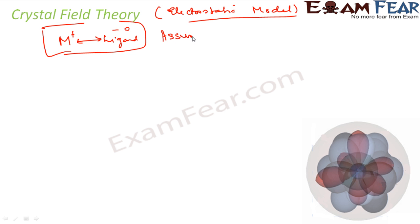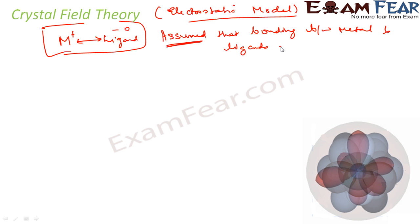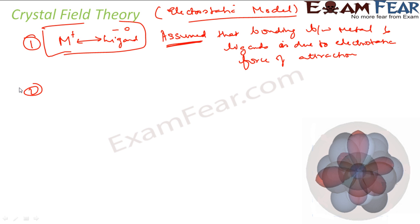Please note — it is assumed that the bonding between metal and ligands is due to electrostatic force. That is the key assumption. The second point is that coordination compounds favor the geometry that minimizes repulsion between the electron clouds of the ligands — that is, the geometry that gives maximum stability.